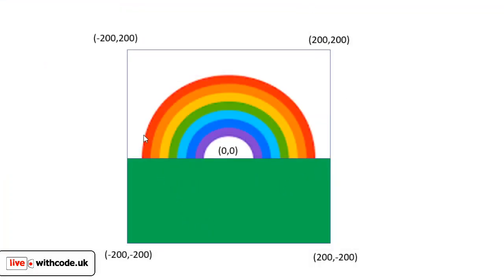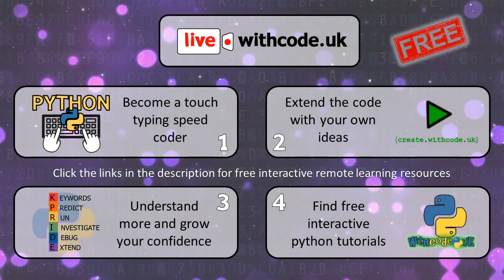Some green grass on the floor, a nice blue sky — it's been beautiful recently — and then all of these different circles in different rainbow colours. Just a reminder: you can find a link to all of the code — that's link number two on the web page or in the description on YouTube. Link number one lets you type out the code as fast and as accurately as you can. Link number three is to some K-Pride activities to improve your confidence in debugging. Link number four is some links to free online remote learning activities so you can read around the topic.